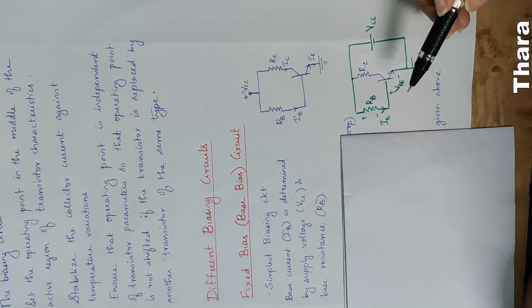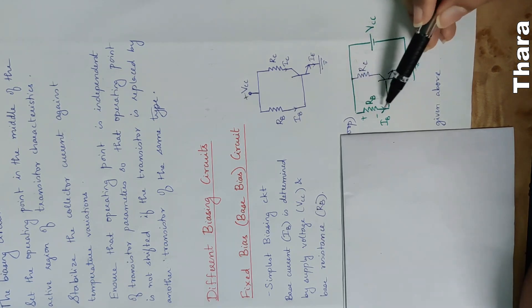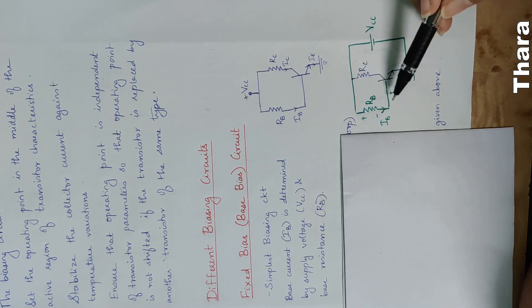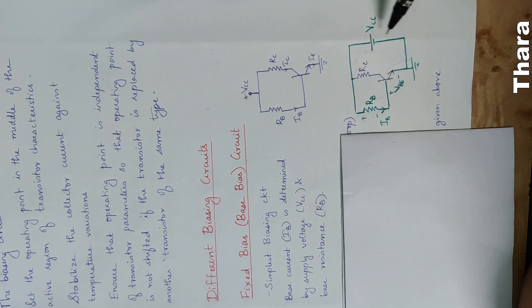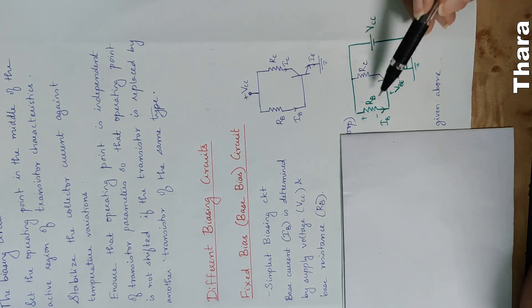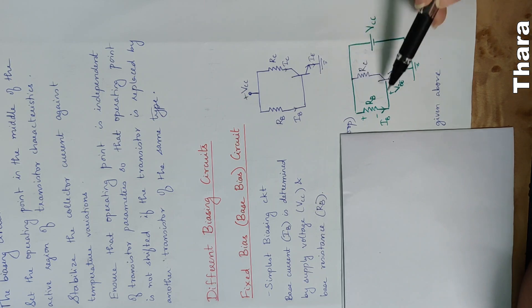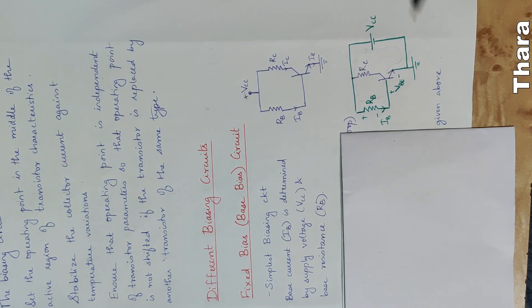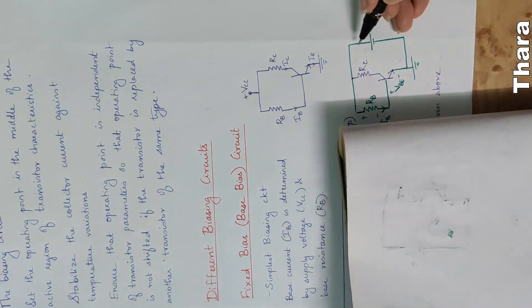That is the base current equation. In the input loop — the base-emitter loop — we have the base current flowing in this direction.